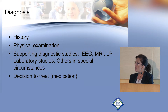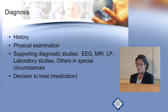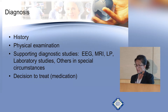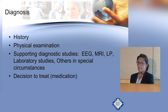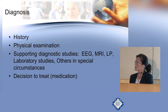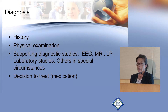Regarding diagnosis, it is primarily based on history — information gathered from reliable or unreliable witnesses — and a physical examination, which is often normal. We then perform an EEG, and in most cases, particularly in adults, an MRI, along with other supporting tests as needed.